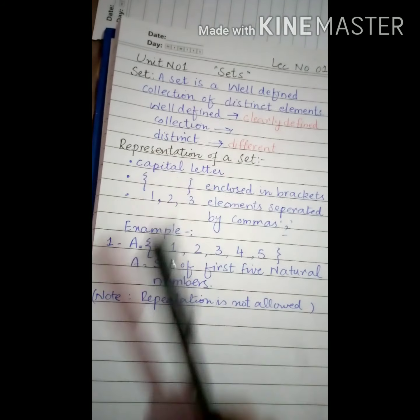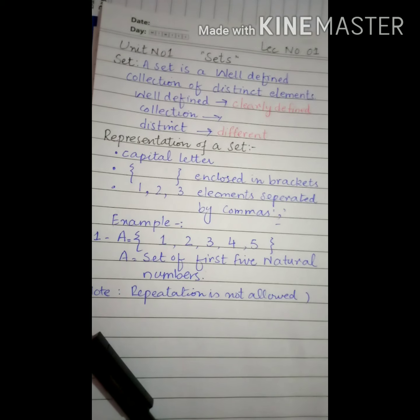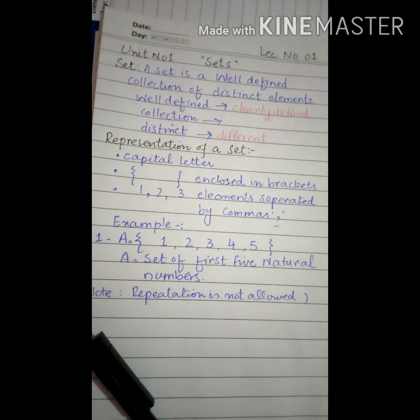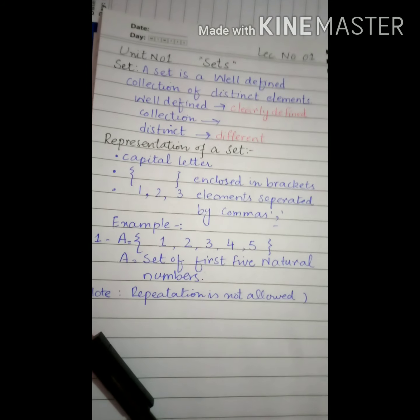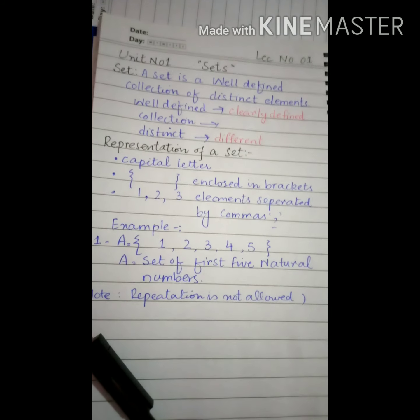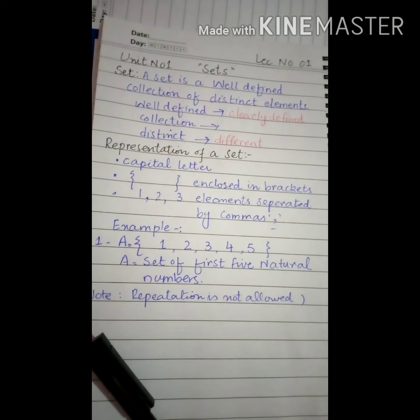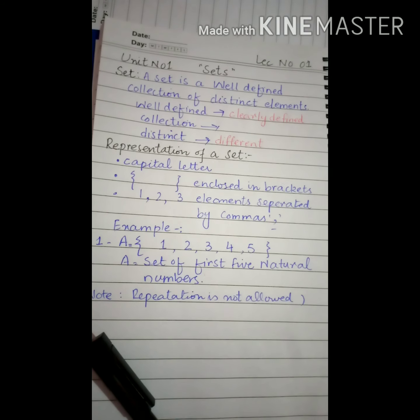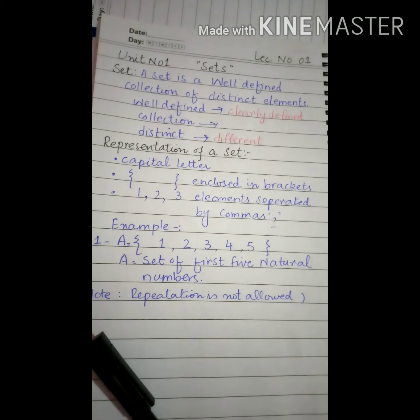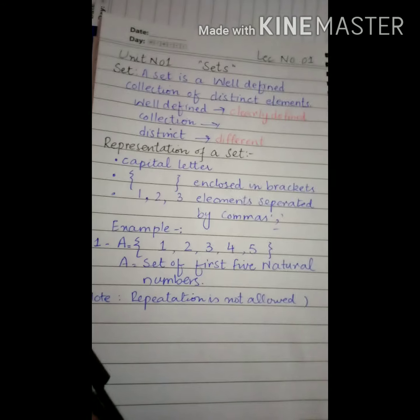Well defined means کوئی بھی ایسی چیز جو آپ کو بہت ہی clearly explain کی جائے اور آپ کو آسانی سے اس کی سمجھ آ جائے. For example, if I ask you to count from 1 to 10, you know that counting always starts with 1 and we're telling you the last limit is 10, so it means you have to say 1, 2, 3, 4, 5, 6, 7, 8, 9, 10. It is a clear statement. So well defined means بہت ہی clear قسم کی statement دی جائے.